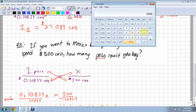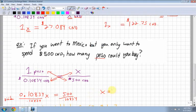I bring up my calculator. 500 divided by 0.10834, so I have $500 Canadian. This is going to tell me how many pesos I can buy. Wow. 4,615.10. So x equals 4,615.10.